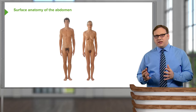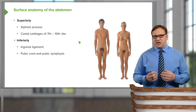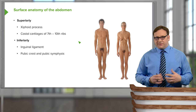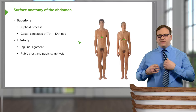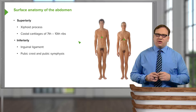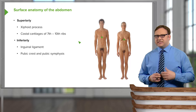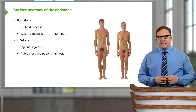On screen we can see the body plan of the male and the female, and we're concentrating on the abdominal region positioned inferior to the thorax. We can pick out important landmarks, starting superiorly with the xiphoid process — you can feel this on yourself by running your fingers down the sternum to where it stops. Radiating laterally away from this process, we have the costal cartilages of ribs 7, 8, 9, and 10, which mark the superior boundary of the abdomen.